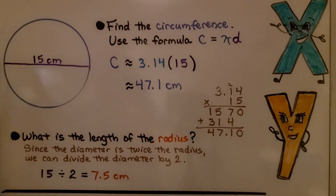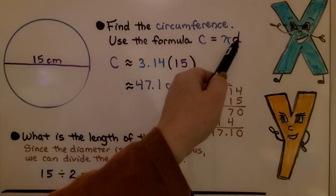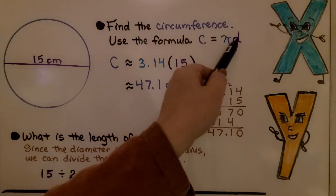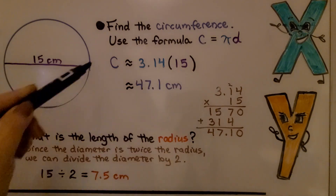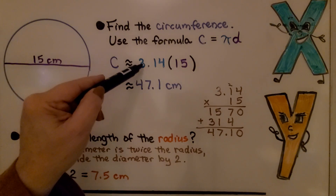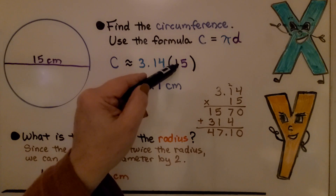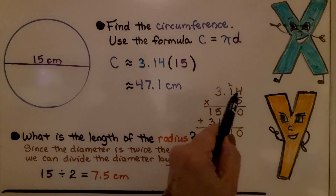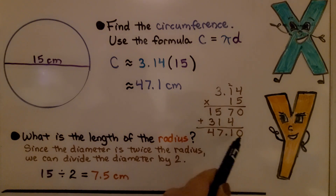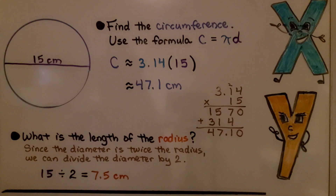Here we have a circle and we can see the diameter is 15 centimeters. Find the circumference using the formula c equals πd. Since it's giving us the diameter, we can use this formula directly. We have c is approximately 3.14 — we're not using all the digits of pi, so we use an approximation symbol — multiplied by 15, the diameter. We do the multiplication, and there are two decimal places in 3.14, so there will be two decimal hops in the product. We get approximately 47.1 centimeters.